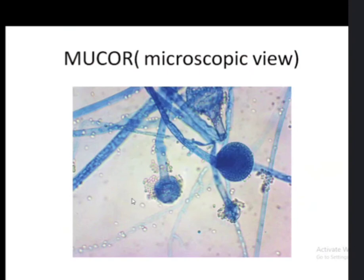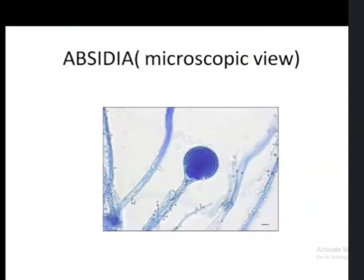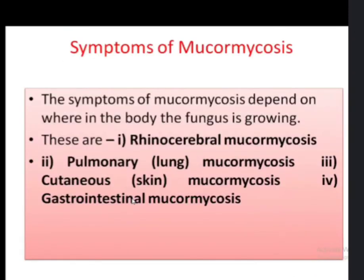Here is the microscopic reproductive structure of Mucor and Absidia. The symptoms of mucormycosis depend on where in the body the fungus is growing, and they are of various types: rhino-cerebral mucormycosis, pulmonary mucormycosis, cutaneous mucormycosis, and gastrointestinal mucormycosis.